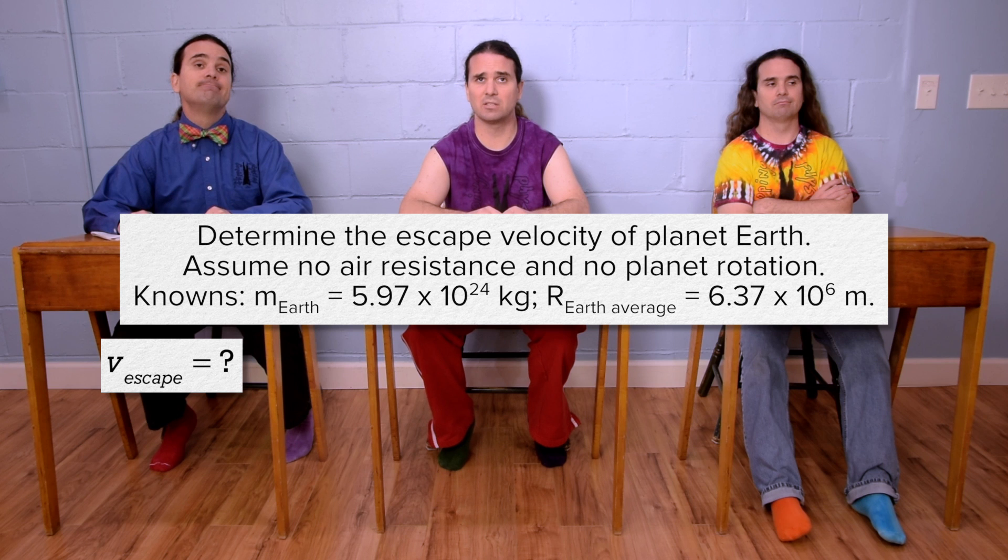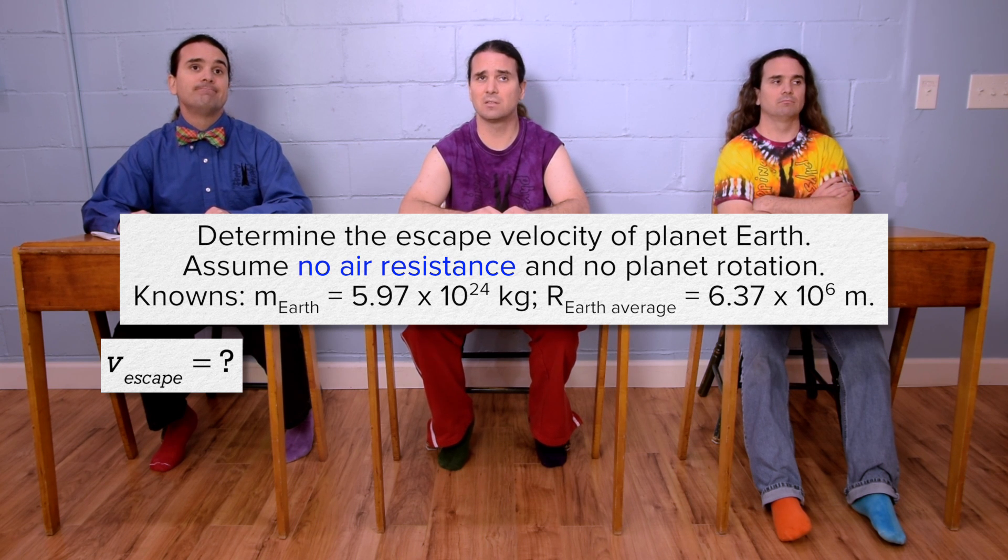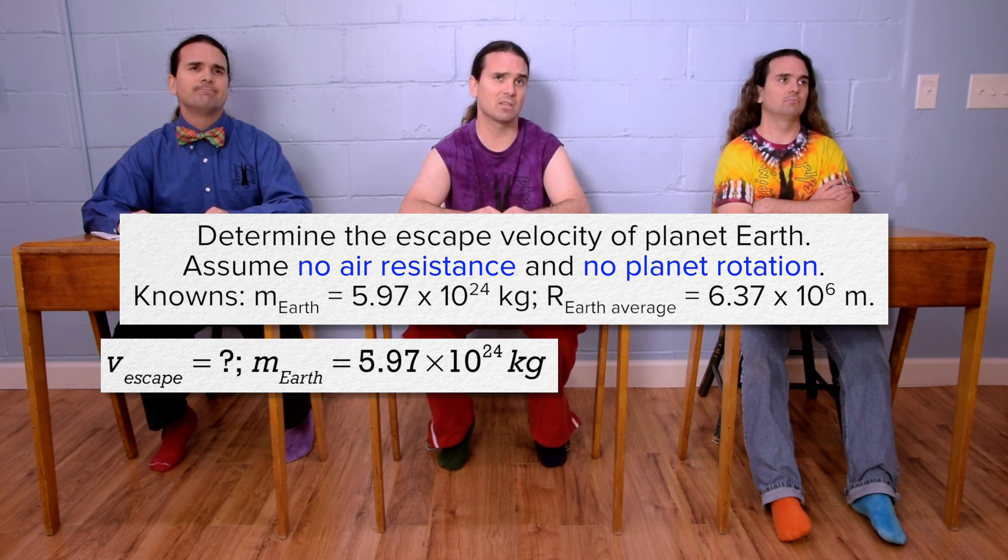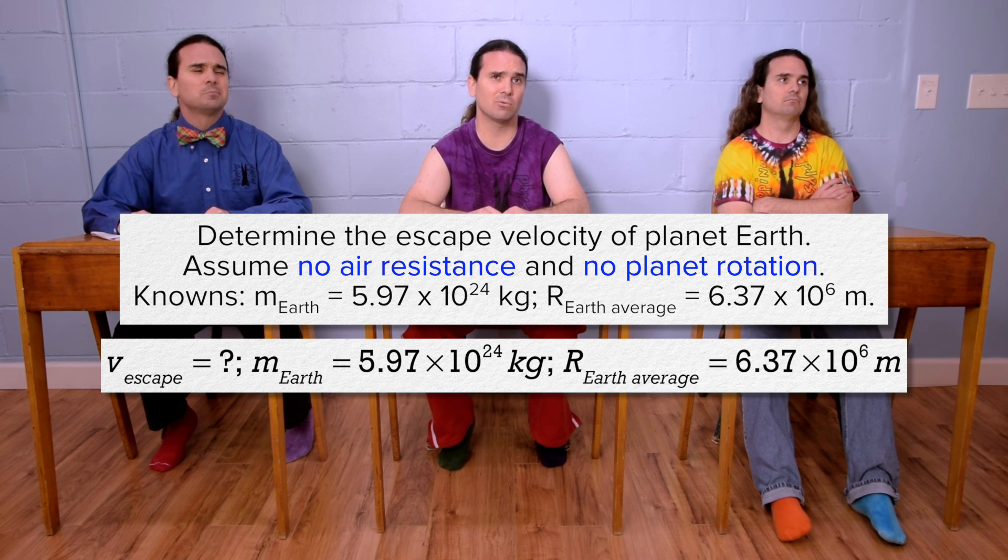Escape velocity equals question mark. No air resistance and no planet rotation. Mass of Earth equals 5.97 times 10 to the 24th kilograms and average Earth radius equals 6.37 times 10 to the 6th meters.